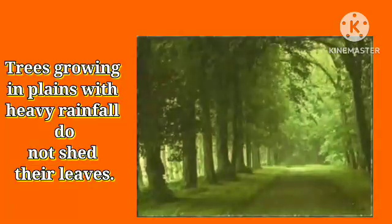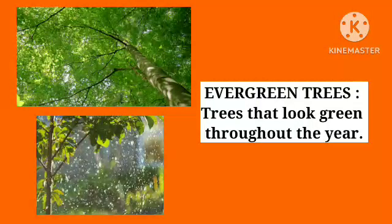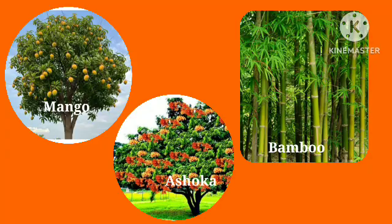Trees growing in plains with heavy rainfall do not shed their leaves. Instead, these trees keep replacing their old leaves with new ones and look green throughout the year. These trees are called evergreen trees. Mango, bamboo, and ashoka are some evergreen trees.